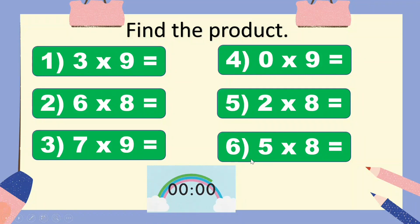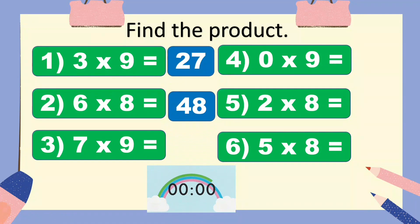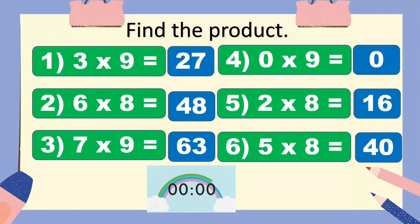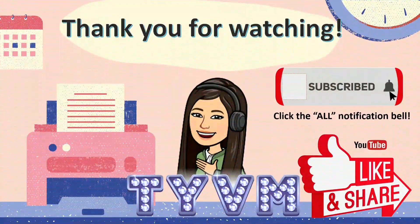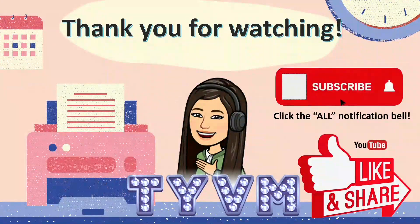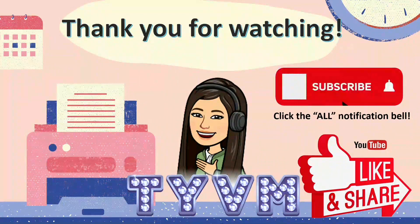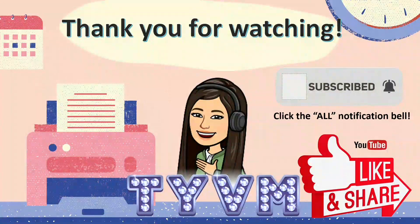Time is up! Let's check the answers. 3 times 9 is 27. 6 times 8 is 48. 7 times 9 is 63. 0 times 9 is 0. 2 times 8 is 16. And 5 times 8 is 40. Very good! That's it for today. Thank you for watching and listening. If you are new here, please subscribe and click the notification bell so you'll be notified when new videos are uploaded. Please like and share this video. Bye! God bless you all!